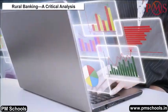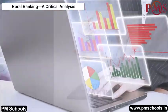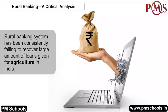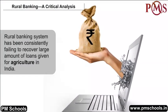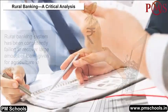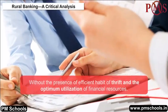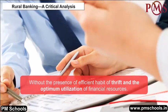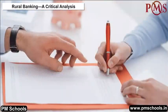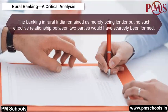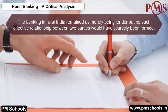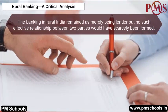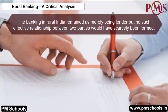Rural banking has been consistently failing to recover large amounts of loans given for agriculture in India. Without an efficient habit of thrift and optimum utilization of financial resources, despite several attempts, banking in rural India remained merely a lender, with no effective relationship between the two parties having been formed.